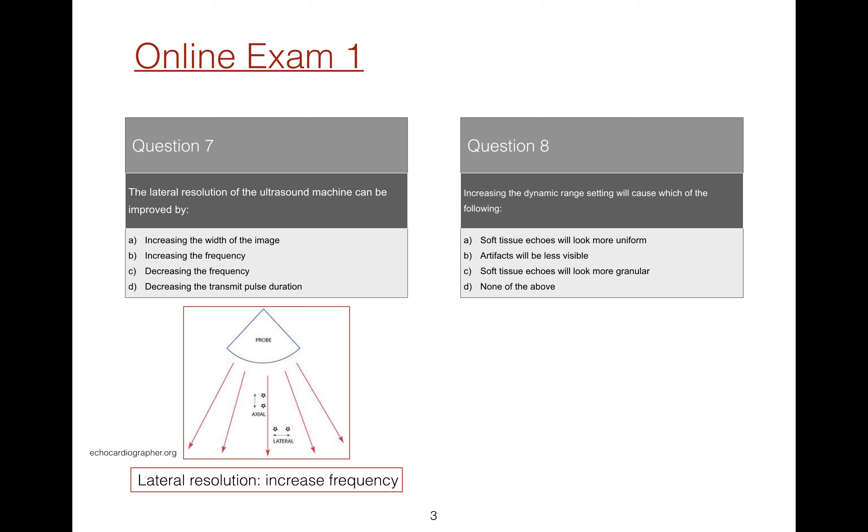Question 8: Increasing the dynamic range setting will cause which of the following? Well, increasing the dynamic range makes soft tissue echoes less granular, means that artifacts appear more visible. And so the answer to this question was soft tissue echoes will look more uniform when the dynamic range setting is increased.